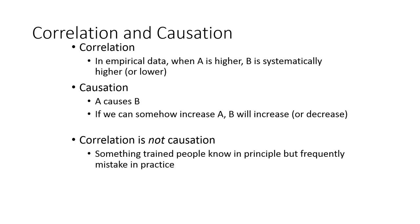You've probably heard the phrase before that correlation is not causation. What exactly does this term mean? Well, first we'll talk about the idea of correlation. Correlation simply means that there is a relationship between two variables. So in empirical data, a correlation exists when a variable such as A is higher, another variable such as B is systematically higher or perhaps systematically lower.